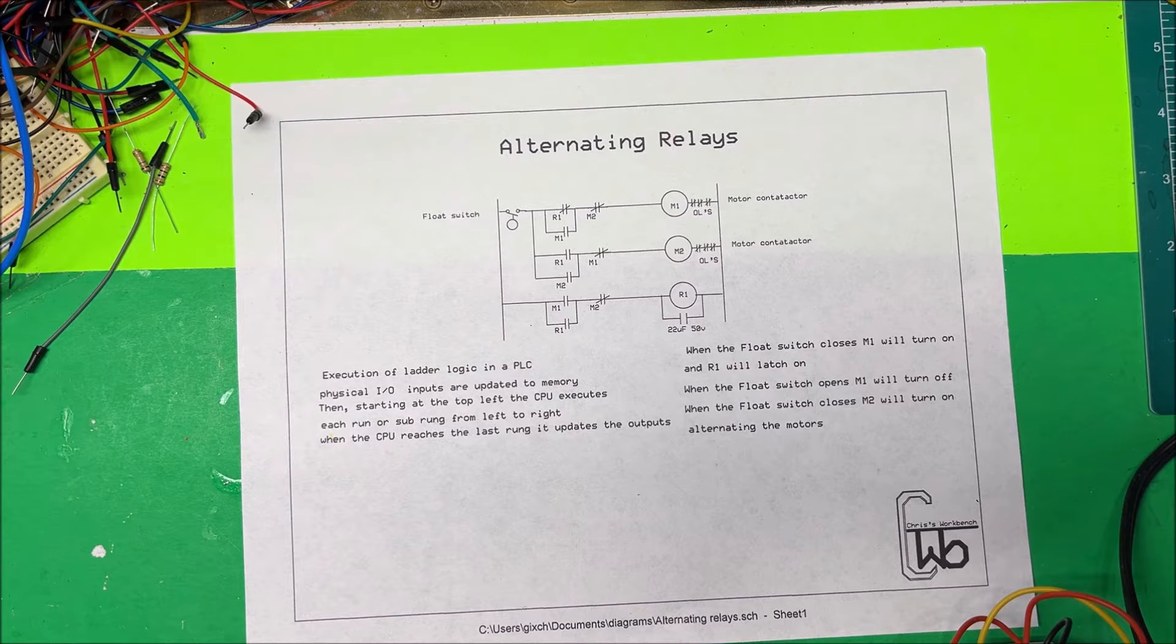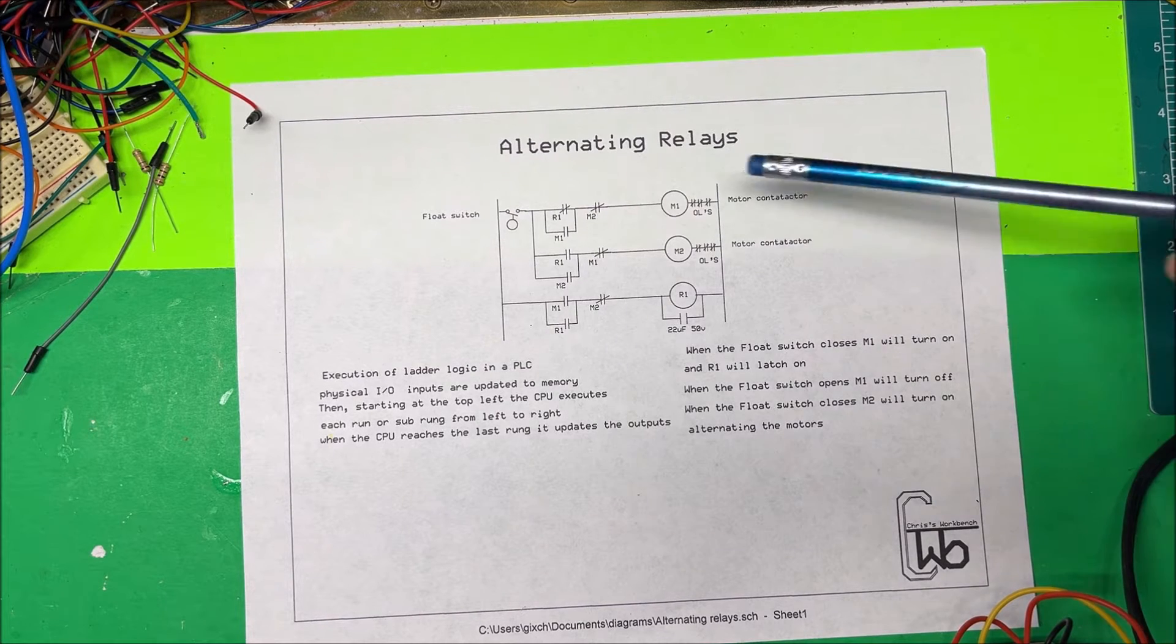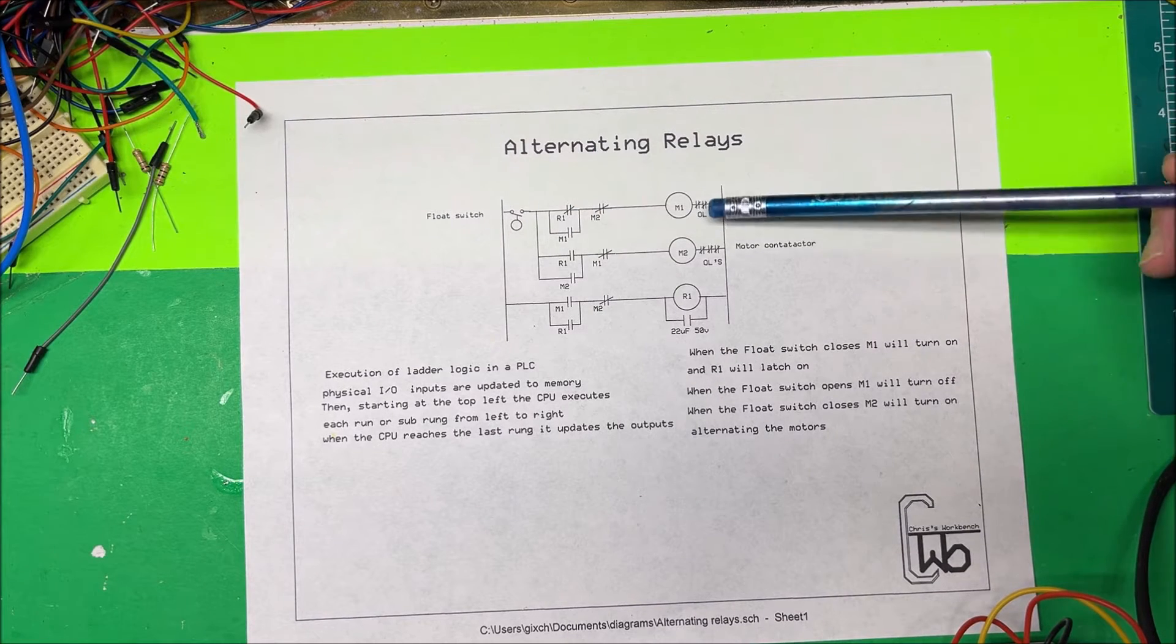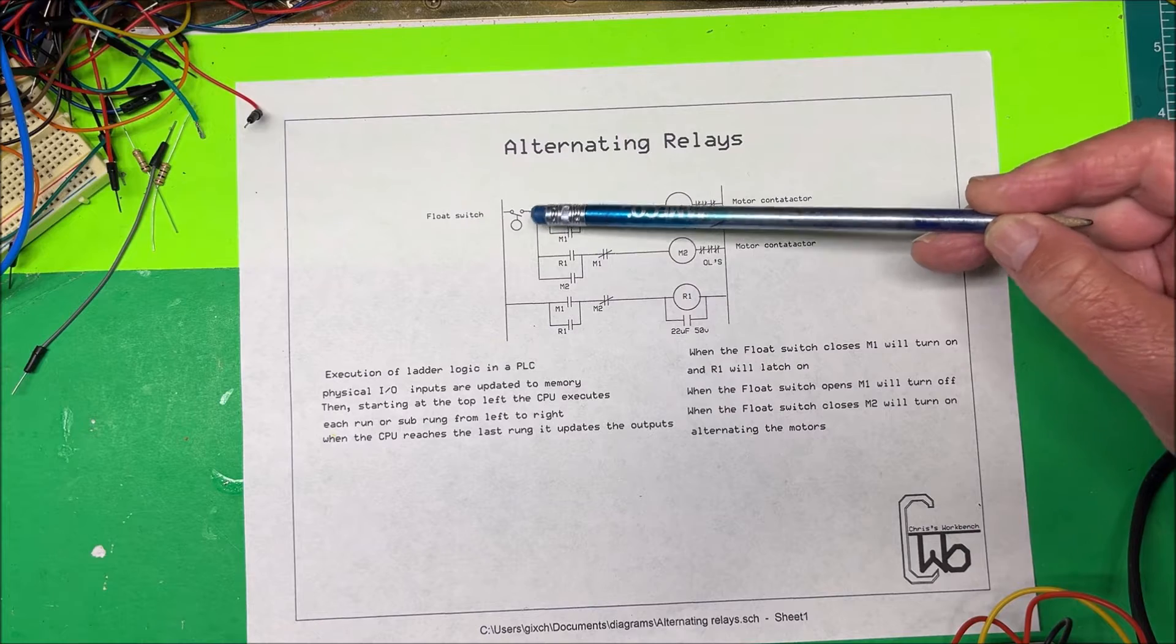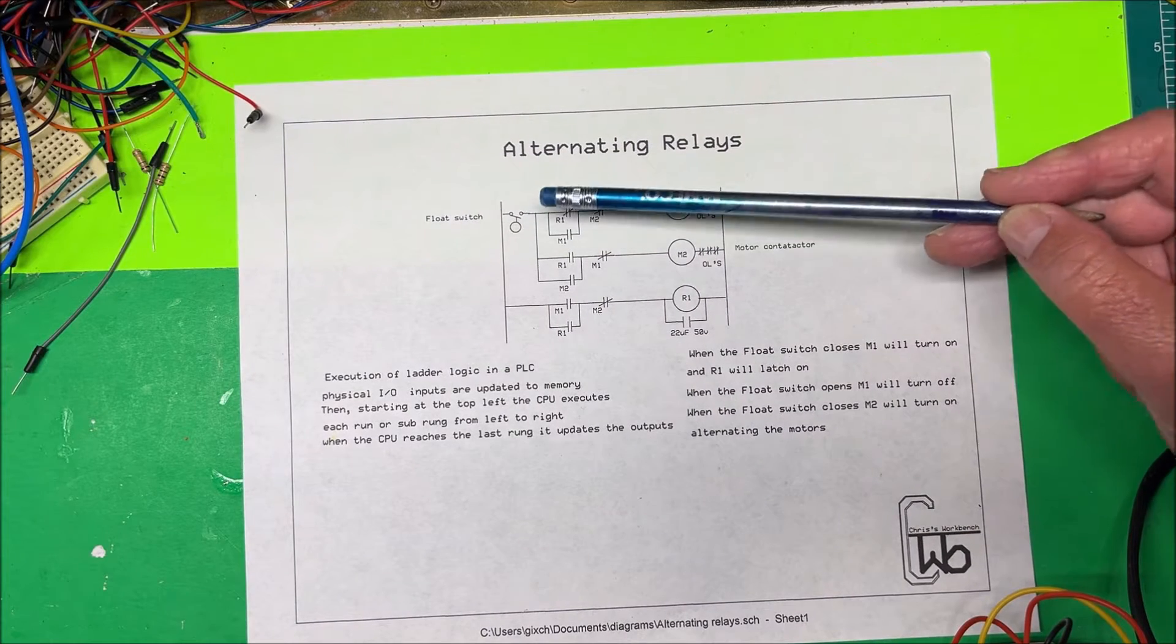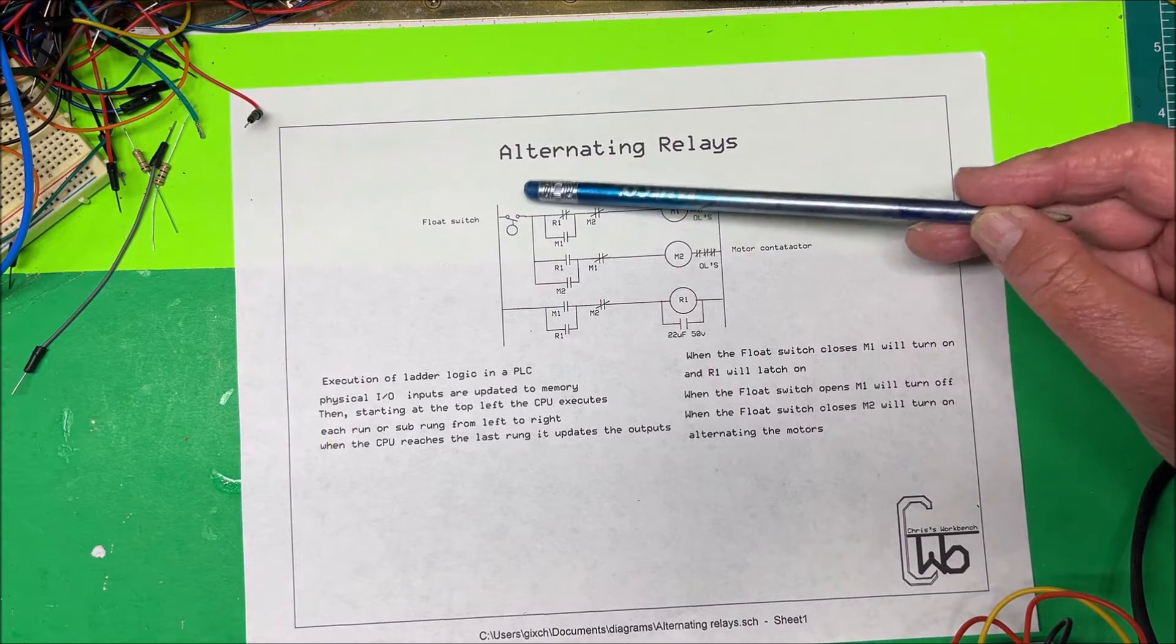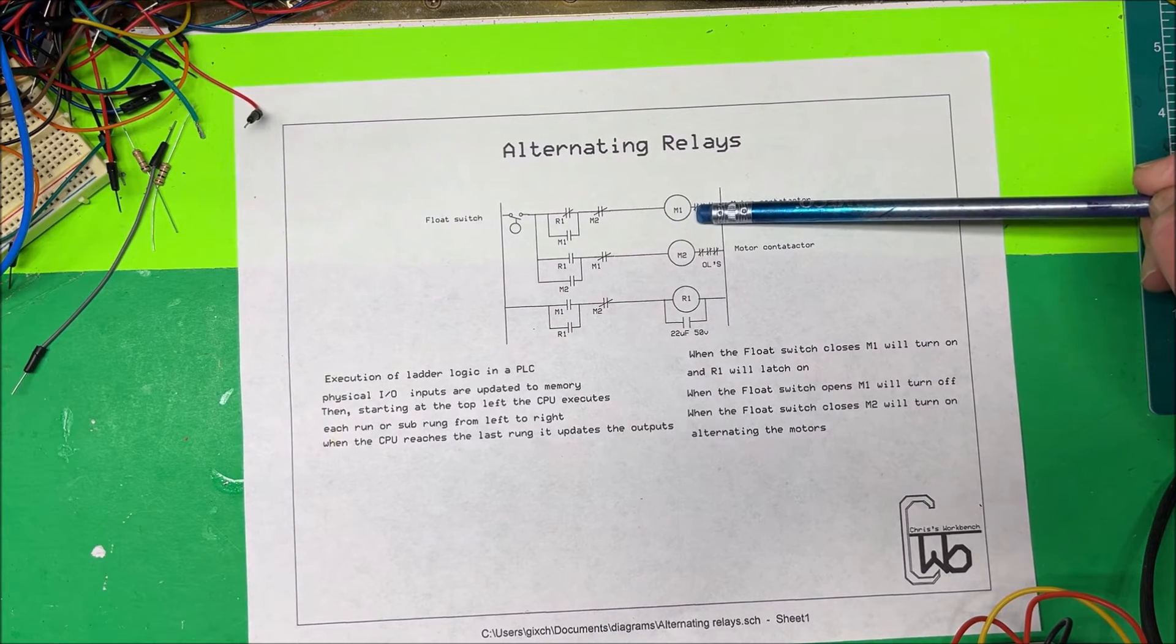You run one first, and then the second time around you'll run the second motor. The first one can be cooling down when you're running the second one. In this case, I made up a little alternating relays setup to control a sump pump. We got a float down here in the water.